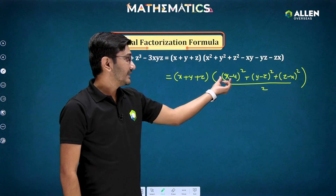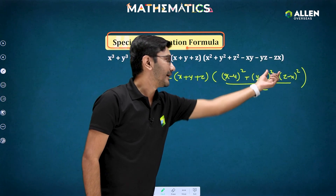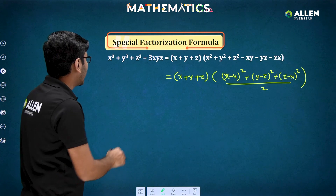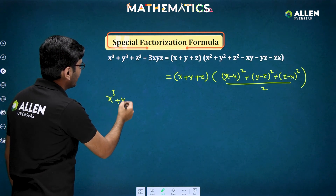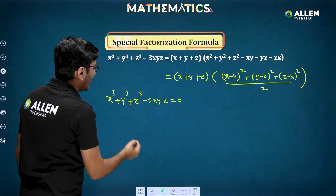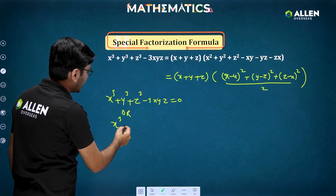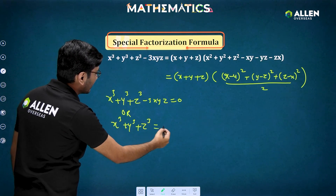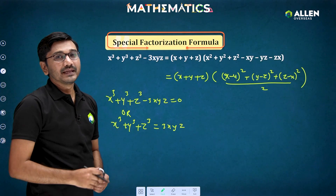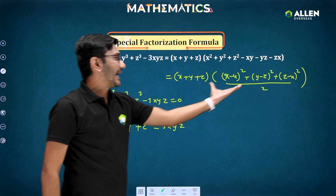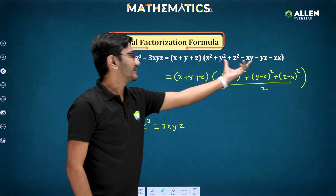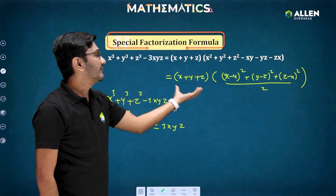The reason for writing it in that form is that every term in the second factor involves squares, and squares are at least zero. So suppose we are given that x³ + y³ + z³ − 3xyz = 0, meaning x³ + y³ + z³ = 3xyz. We can conclude that either the first bracket will be zero or the second bracket will be zero, because these are the two factors of the expression.